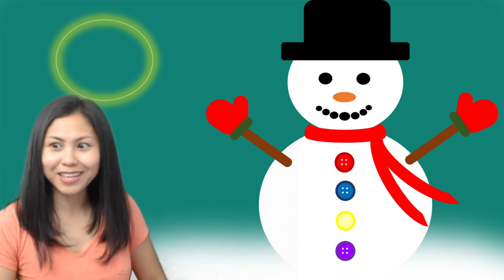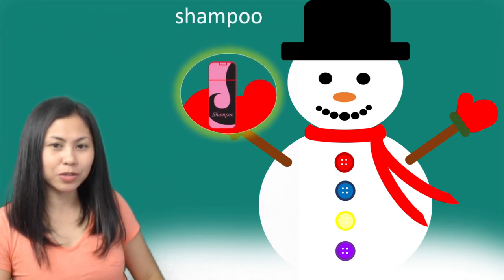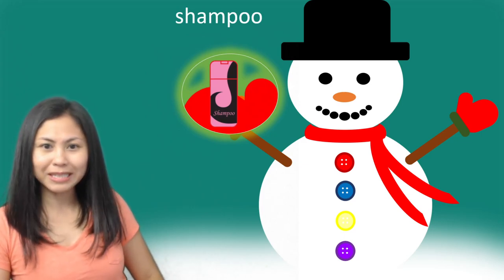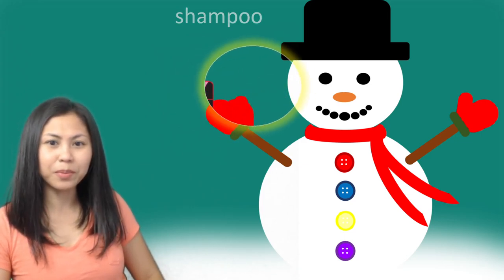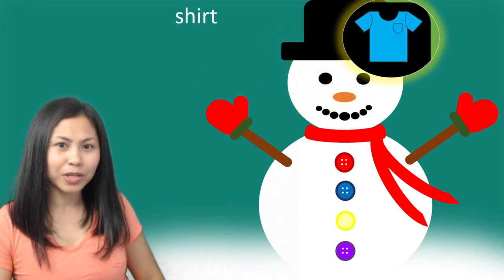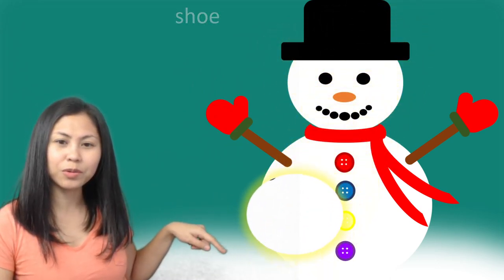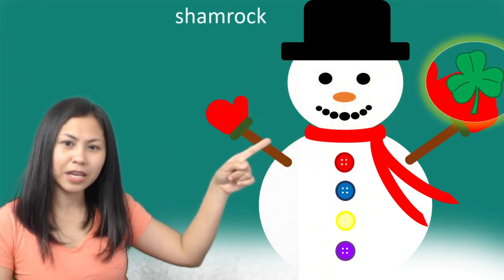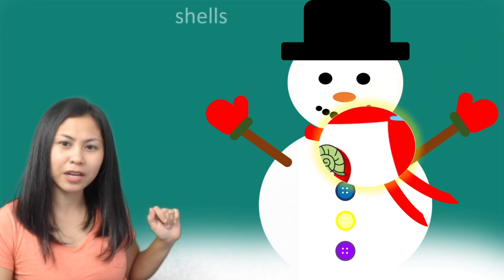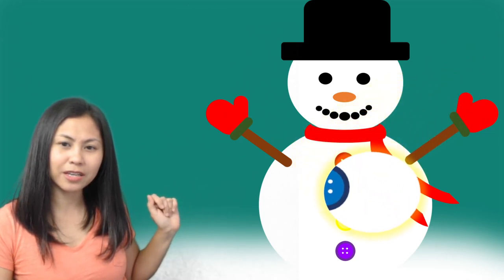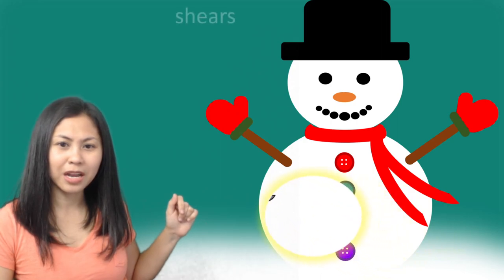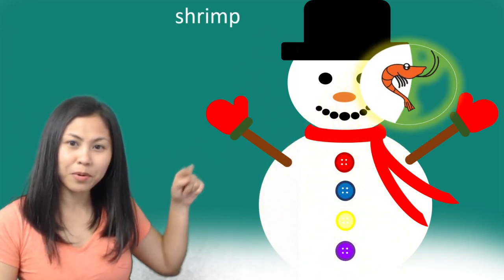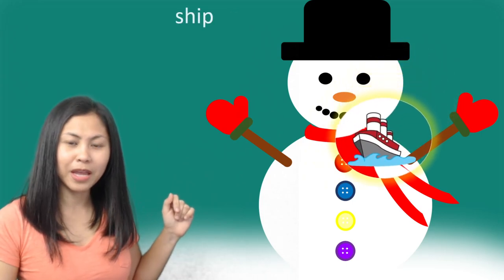And it goes like this. It goes to the body part or the mitten and it's showing shampoo. Now it's showing a shirt, and then the shoe. It goes to the shovel and to the shamrock, to the shells, sugar, shears, shrimp, and ship.